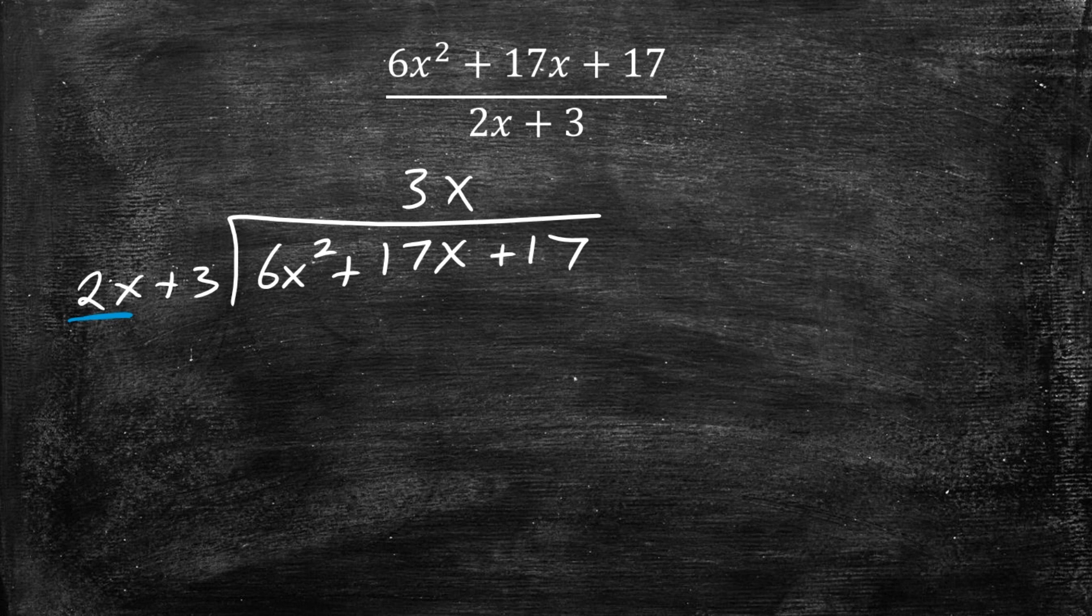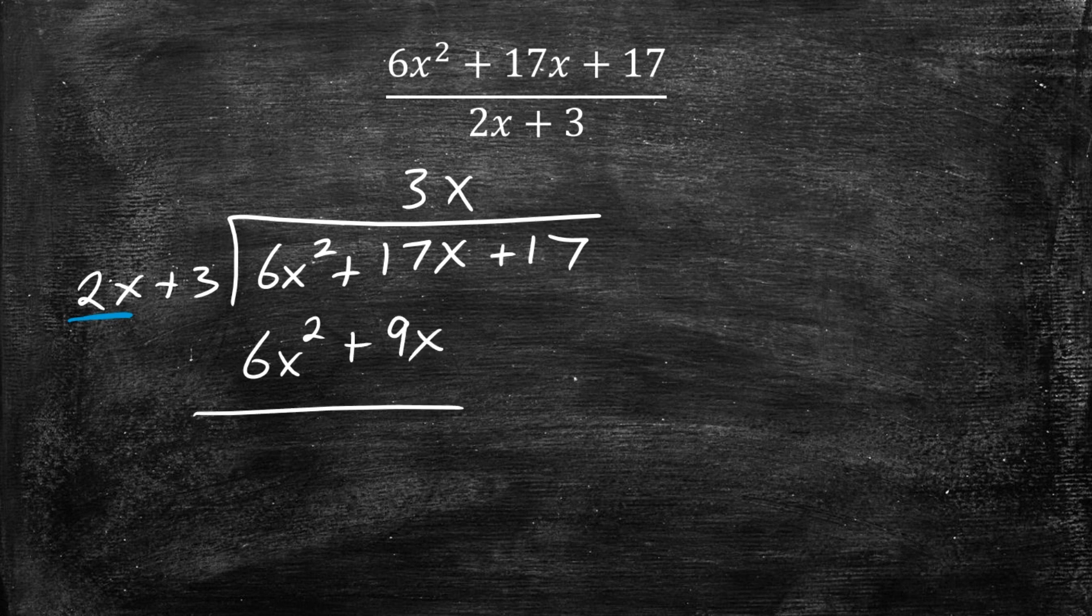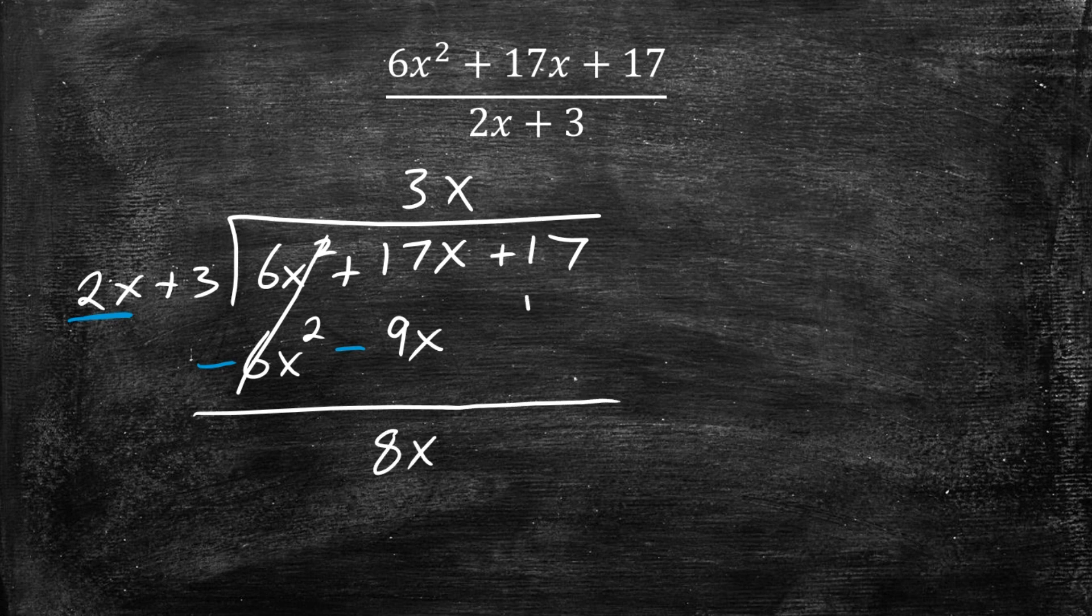So now we're going to go ahead and do the multiplication. So 3x times 2x is 6x squared, and now we do 3x times 3, which is positive 9x. And what we do from here is subtract these together. So I'm going to change the signs, and then this right here is going to become a negative. So when you do that, these are going to cancel, and then you get 17x minus 9x, which is 8x. And then we bring down the 17 here.